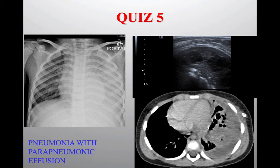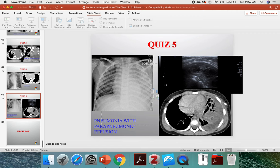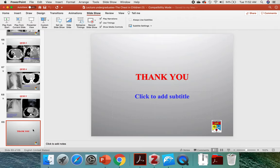In summary, we have covered the basic radiological approach to chest radiograph pertaining to children. Some diseases are quite unique to children and not present in adults. The approach is to identify which radiographic abnormality pattern is present, determine where the pathology is, and then formulate the differential diagnosis. Thank you.